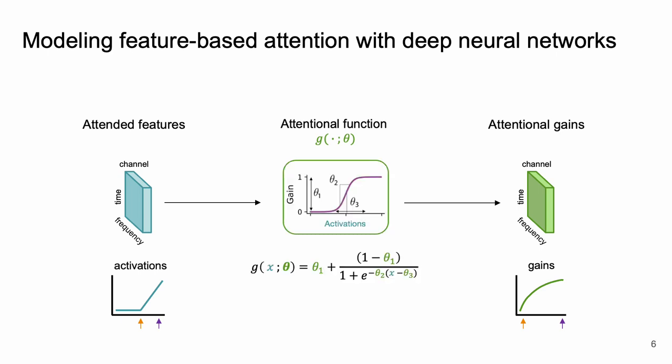We do this by parameterizing a sigmoid function. These parameters are going to let a model learn which features to pick and how strongly to weight them to solve our selective listening task.